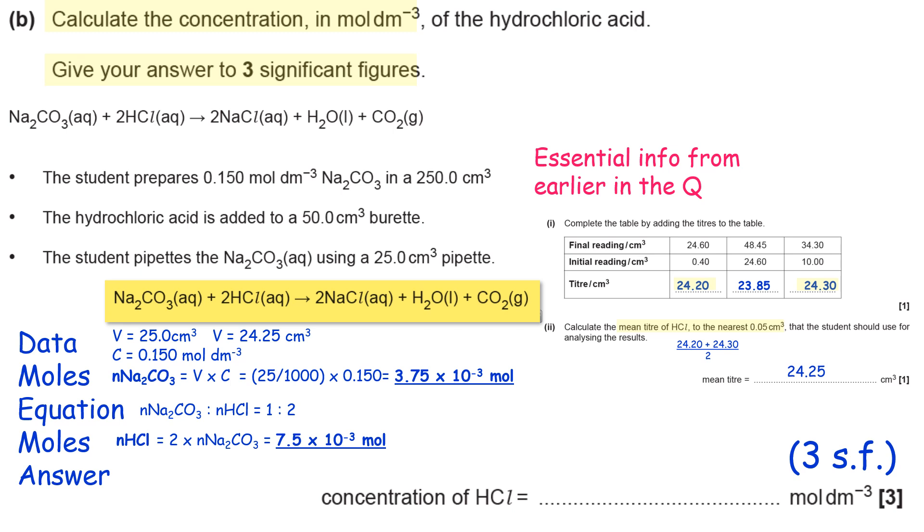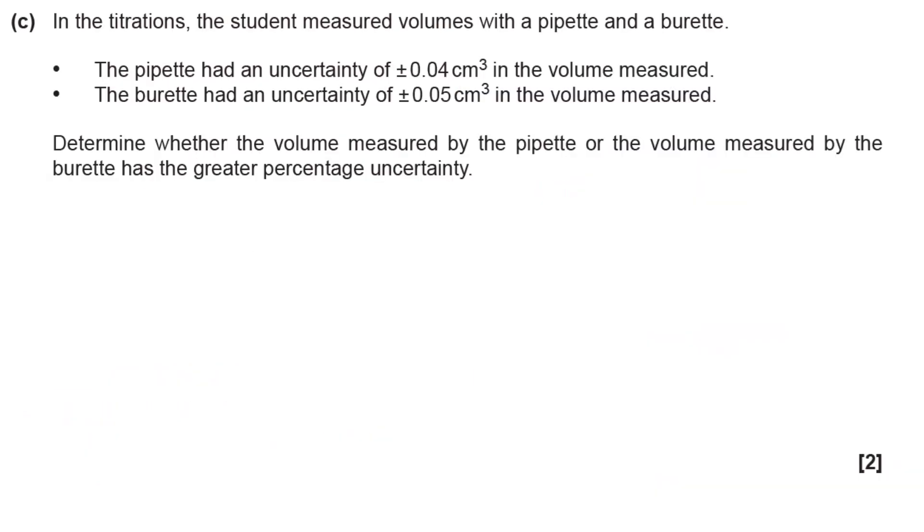I'm underlining the things I'm actually working out so the examiner's attention is drawn to them - those are the marking points in the mark scheme. Working out concentration, you just do n over V, so you divide your number of moles of HCl by the actual volume which we worked out to be 24.25 cm³. You need to convert that to dm³, hence dividing it by a thousand. Coming out of the calculator, that gives you a number starting with 0.309. They want it in three significant figures form, so I round it to 0.309 mol dm⁻³.